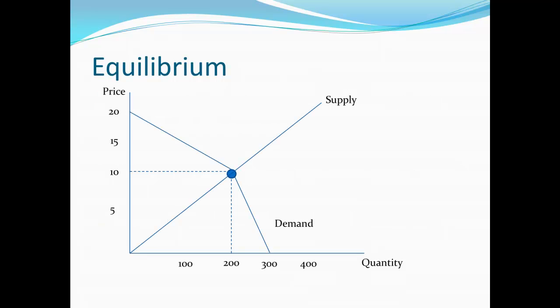In terms of identifying equilibrium on a graph, it's relatively easy. Just take the supply and the demand, find where they intersect, and that gives us equilibrium. In the case we were working with before, the price is $10 and the quantity is 200. At a price of $10, we know that 200 will be supplied and 200 will be demanded — quantity supplied equals quantity demanded. We could also do this on a table with supply and demand schedules, just by looking for where the quantity supplied and quantity demanded line up at the same price.